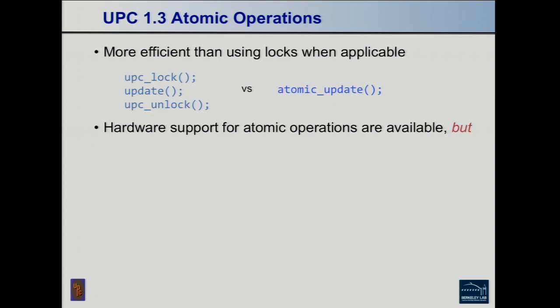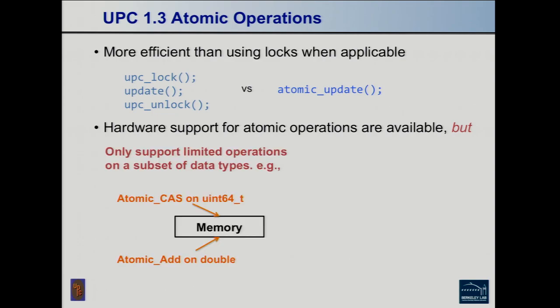UPC 1.3 also has atomic operations. Rather than having a lock-update-unlock sequence, you have the ability to do an atomic operation as a single operation. There's a limited set of atomics. Atomics have been a topic of discussion in the UPC specification group for many years, because the problem has been figuring out what vendors will support in terms of doing an atomic operation in the network interface. Ideally, for an atomic add, the network interface — not the main CPU on the other side — does the add for you. Getting consistency across vendors on hardware-level atomic support is something hoped for in next-generation networks.